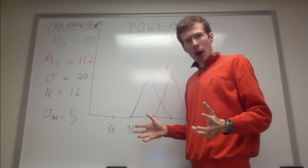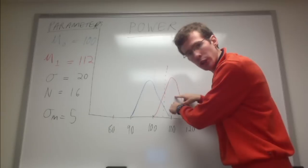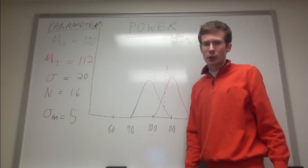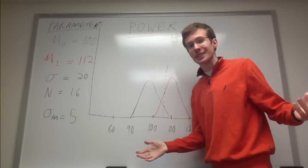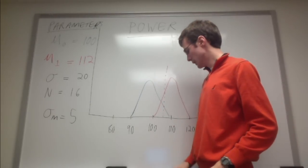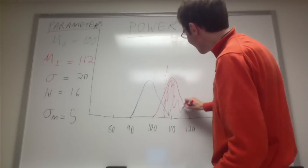To calculate the power, the power is simply the area of this alternative distribution that lies to the right of this cutoff threshold. Let's say this is a directional test and not a two-sided test. Everything shaded to the right of that line is our power.